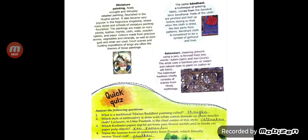Quick quiz: What is the traditional Tibetan Buddhist painting called? It is called Thangka (T-H-A-N-G-K-A). Which style of embroidery uses white cloth threads on plain muslin cloth, with Lucknow in Uttar Pradesh as its chief center? That is called Chikankari (C-H-I-K-A-N-K-A-R-I). Which Kashmiri paper-mache art form uses flower motifs and is made on paper pulp objects? That is called Kari Kamdani. Name the famous embroidery from Punjab meaning 'floral craft' — that is called Phulkari (P-H-U-L-K-A-R-I).